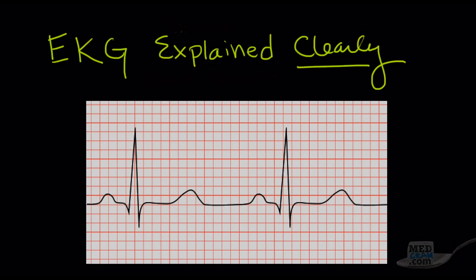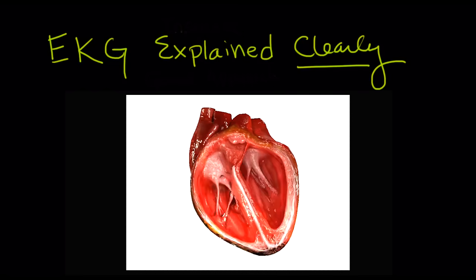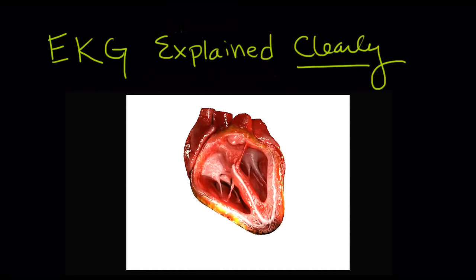You'll understand the electrical activity represented on EKG paper that allows this process to happen - the heart to beat and cycle blood through our lungs and bodies.